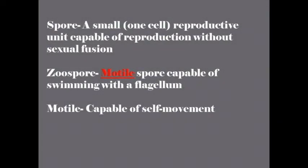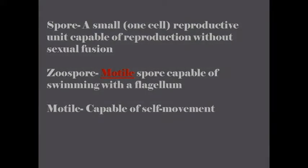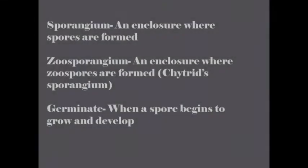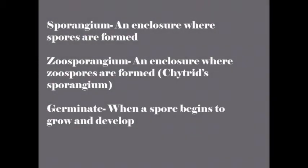Spores are small reproductive cells notably capable of reproduction without sexual fusion. Zoospores are motile spores capable of movement with a flagellum. Motility is the ability to self-move. Sporangiums are enclosures where spores are formed. Zoosporangiums are chytrid sporangiums. To germinate is when spores begin to grow and develop.